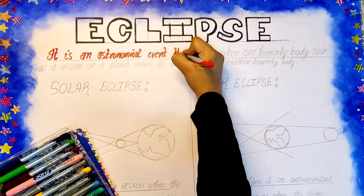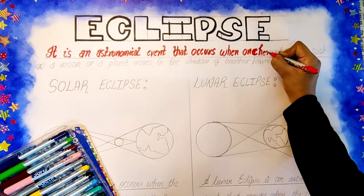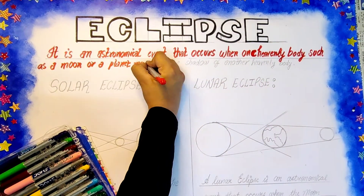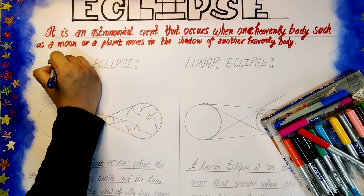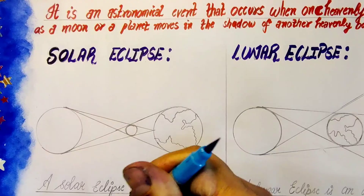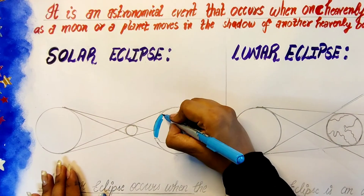Now with the help of Domes water pen we'll be tracing the definition of the eclipse. You can use red color or any vibrant color. Further we'll also trace the definition of solar and lunar eclipse.